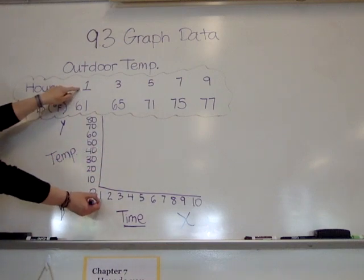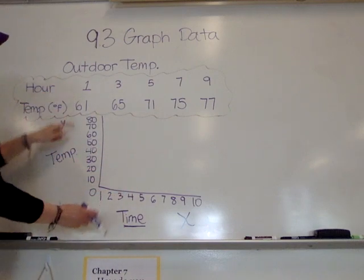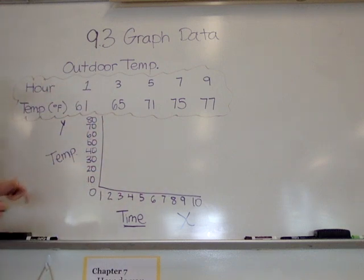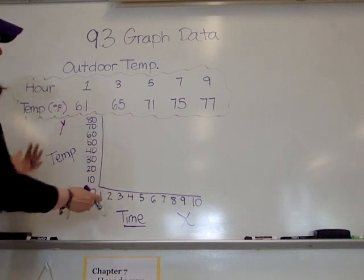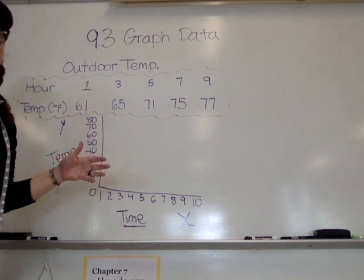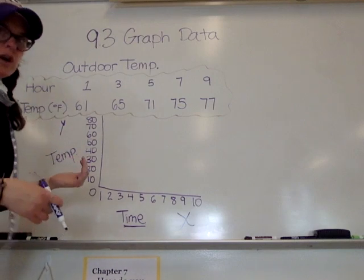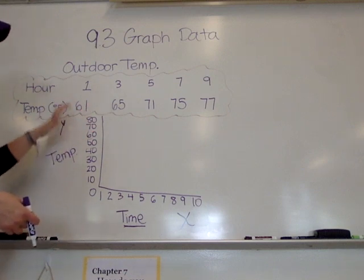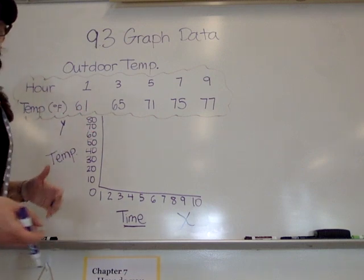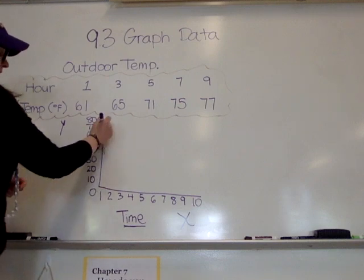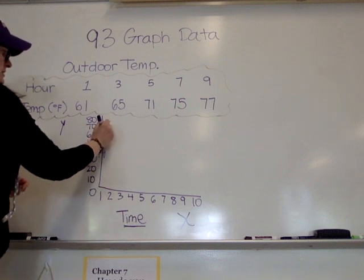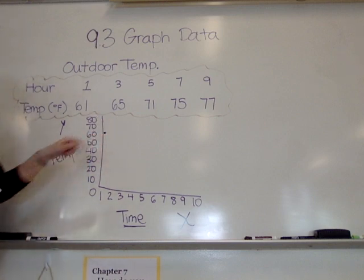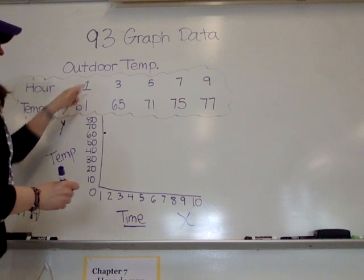So we're starting with hour 1. You're matching up the numbers on the x and the y parts of your graph. Hour 1 is at 61 degrees. Now obviously we're not using an actual graph here because I'm on the whiteboard and you can make your graphs different amounts of time, different numbers to get it more exact. So this is going to be just an estimate. So 1 and 61, just around that 60 mark and we're just going to make a mark, a dot, to indicate that first set of numbers.